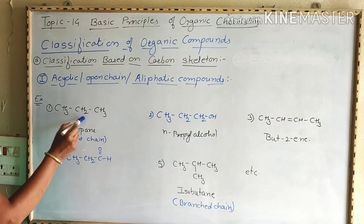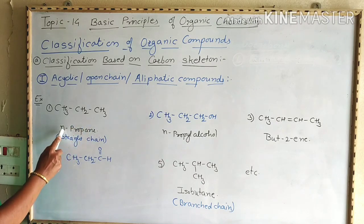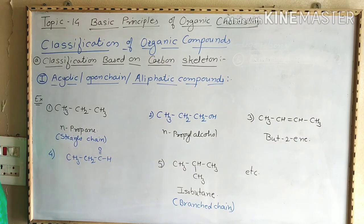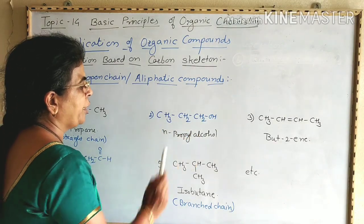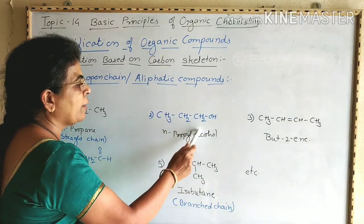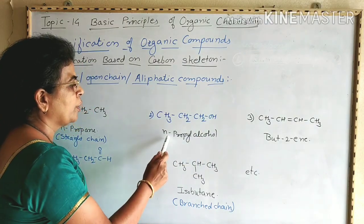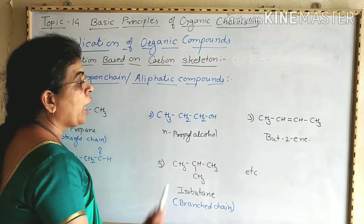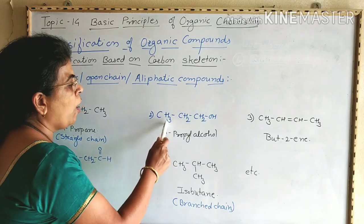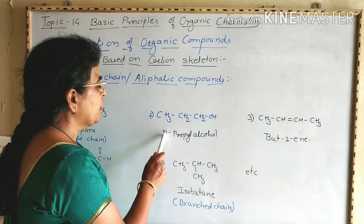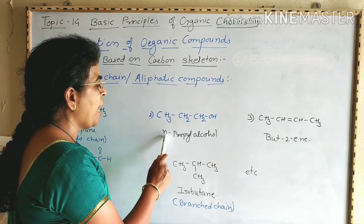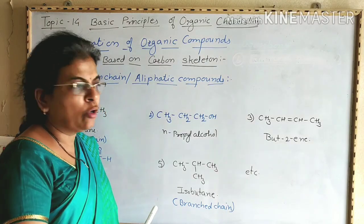For example, CH3-CH2-CH3 is N-propane. Three carbon atoms are in a straight chain, therefore it is a straight chain compound. Second example: CH3-CH2-CH2-OH. Here there are three carbon atoms attached to an OH group, that is a hydroxyl group, therefore it is N-propyl alcohol. All three carbon atoms are in a straight chain. Here, 'N' stands for straight chain or normal chain.